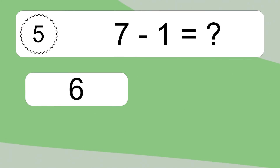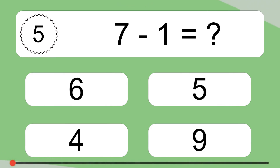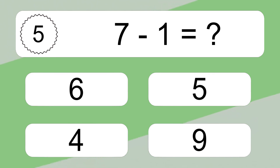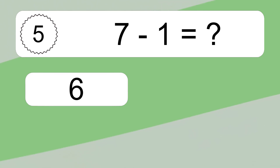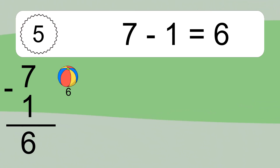7 minus 1 equals what? 7 minus 1 equals 6. Let's count it: 6.